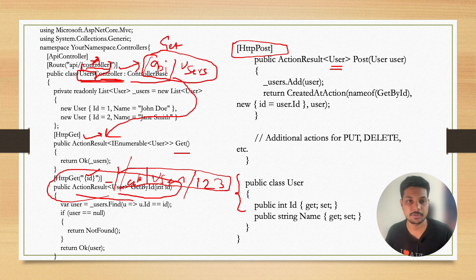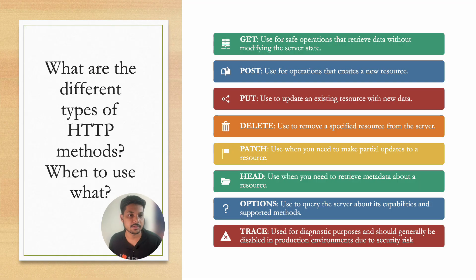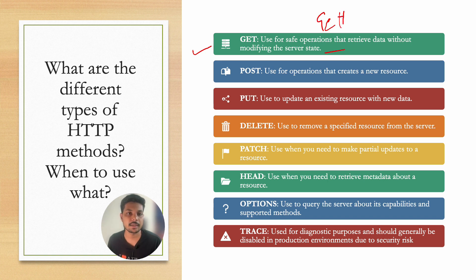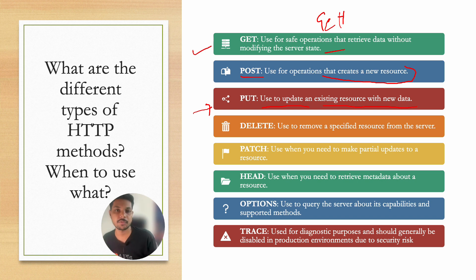The next question is: what are the different types of HTTP methods and when to use them? The GET method is used for operations that retrieve data without modifying server state — for getting some resource or data from the server. POST is used for operations that create a new resource, like creating an entry in the database. PUT is used to update an existing resource with new data when you want to update fields in existing data.